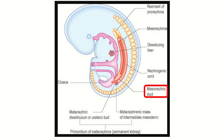In this picture, we can see the different parts of the primitive urogenital system. This area is the metanephric diverticulum or ureteric part. This is the metanephric mass from which the permanent kidney develops. Here we can see the mesonephric duct, and this large area is the nephrogenic cord.